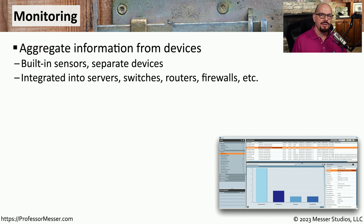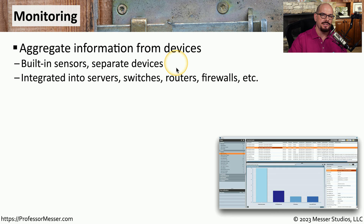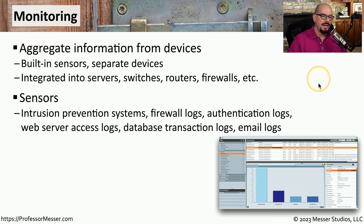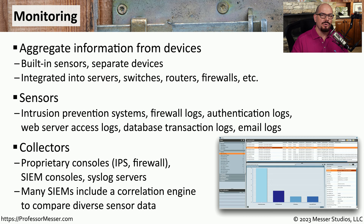In order to identify these security events, it's important to have constant monitoring and be able to log all of the information that's occurring on your network. Monitoring can be done using technologies built into switches, routers, and other devices, or you might have a separate sensor that sits external to those devices. Many security devices will include this type of monitoring, so if you're running a firewall, intrusion prevention system, or an operating system where authentication is occurring, all of this log information is stored automatically. Many times these logs are spread across many different systems, so it can be useful to have all of those log files consolidated back to one central source.